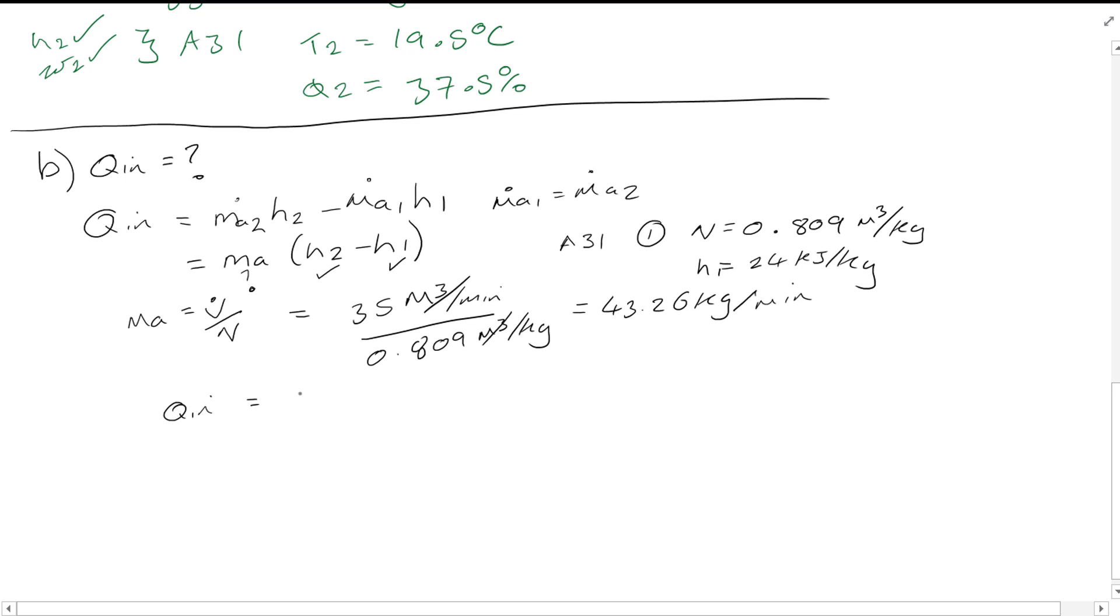Q in therefore can simply be calculated by subbing in the values. And that gives the value of Q in to be around 401 kJ per minute.